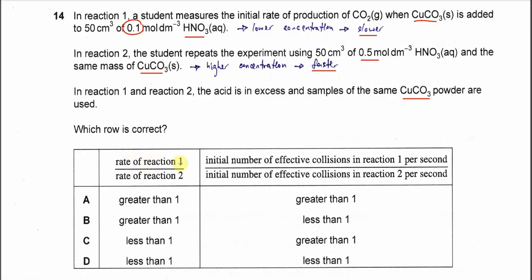For this question, we compare rate of reaction one over rate of reaction two. Since rate of reaction one is lower and rate of reaction two is higher, the ratio is going to be less than one. So the answer is C or D.